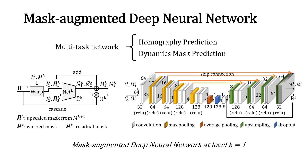Because dynamic content detection and homography estimation are two tightly coupled tasks, we follow multi-task learning principles and design a mask-augmented multi-scale network that jointly estimates the dynamic mask and the homographies at the same time.